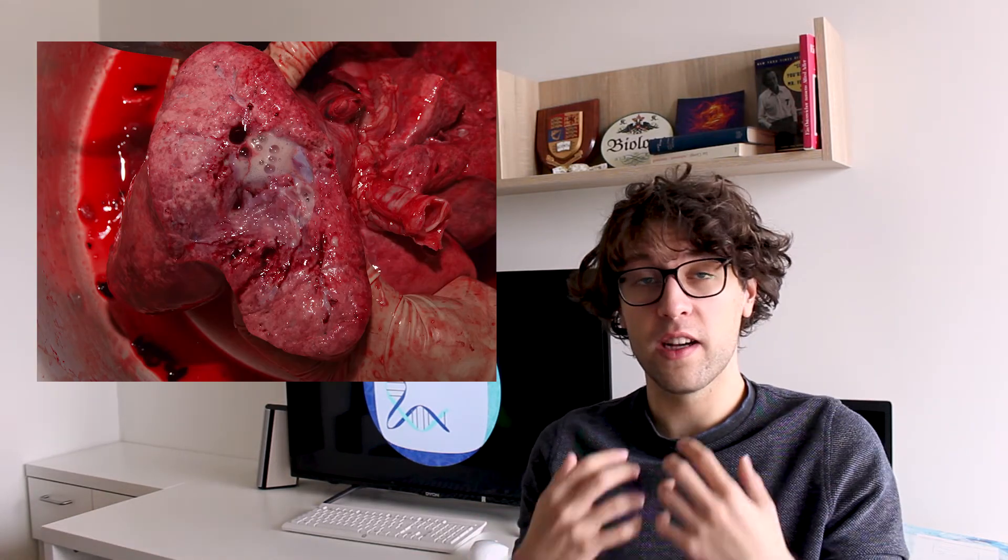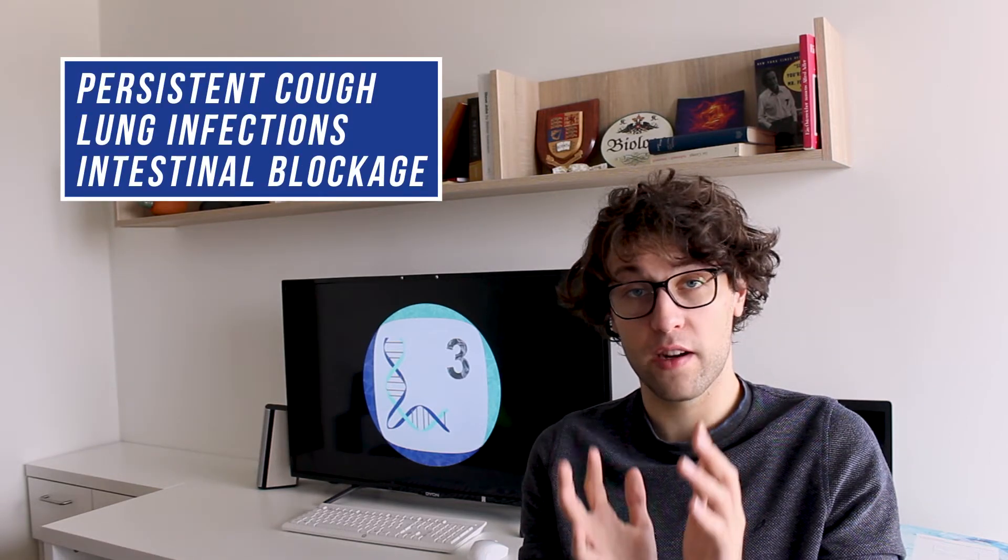Mucus normally protects epithelial cells in the gastrointestinal, the respiratory, and the urogenital tract. Therefore lungs and the digestive tract are mostly affected in patients. A persistent cough, repeated lung infections, and intestinal blockage are common symptoms of cystic fibrosis.